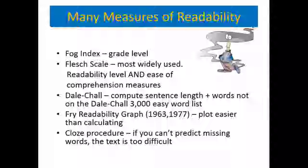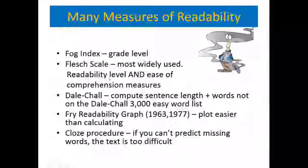Some popular readability formulas: the Fog Index gives a grade level. The Flesch Scale is the most widely used — it gives readability level and ease of comprehension measures, indicating whether something is written in plain language and easy to comprehend versus too dense. Dale-Chall computes sentence length and words not on the Dale-Chall 3,000 Easy Word List. Fry Readability uses a plot instead of a calculation. Cloze Procedure is also used, including the DIBELS Next — if you can't predict the missing words, the text is too difficult.